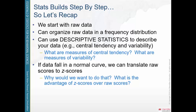Then we can use other descriptive techniques from chapter four to describe or summarize the data. We talked about central tendency — those measures of mean, median, and mode — to talk about the average score. And then measures of variability: range, variance, and standard deviation, which tell us about the spread of scores in the distribution.